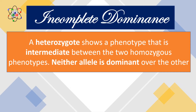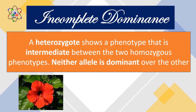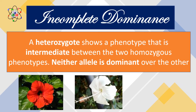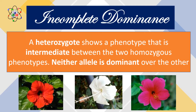One of the best examples is when a red-flowered gumamela plant was crossed to a white-flowered gumamela plant, resulting in a pink-flowered gumamela plant. As you can see, the resulting phenotype of the offspring is intermediate between the phenotypes of the parents. How does it happen?